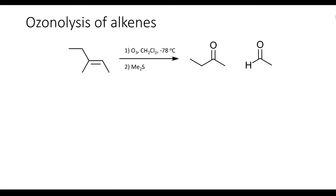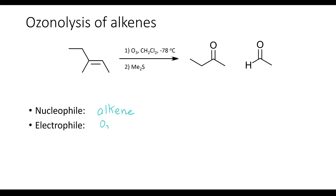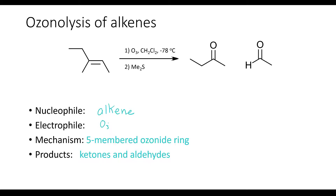Now let's look at another method of oxidizing alkenes: ozonolysis. In this case, we use ozone in a non-protic organic solvent at negative 78 degrees Celsius, and the second step involves dimethyl sulfide. This reaction is very similar to oxidative cleavage with potassium permanganate. However, ozonolysis is a little bit gentler in the sense that the products are not going to be the fully oxidized products — oxidation will only take place to ketones and aldehydes. The nucleophile is again the alkene, the electrophile is the ozone, and the mechanism involves a five-membered ozonide ring.